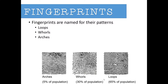Arches are the least common — only five percent of the world population has arch fingerprints, so if you notice arch patterns on your fingertips, you are in the minority. Whorls make up about 30 percent of the population, and loops make up about 65 percent. So loops are the most common fingerprint pattern, then whorls, and arches are the least common.